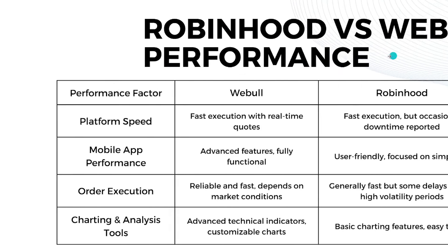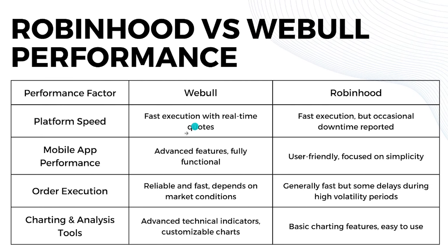Now let's go to performance. For platform speed, Webull has very fast execution with real-time quotes, while Robinhood is similarly fast but with occasional downtime reported. For mobile app performance, Webull has advanced features that are fully functional, while Robinhood is user-friendly and focused on simplicity. For order execution, Webull is very reliable and fast depending on market conditions, while Robinhood is generally fast but can experience some delays during high volatility periods.